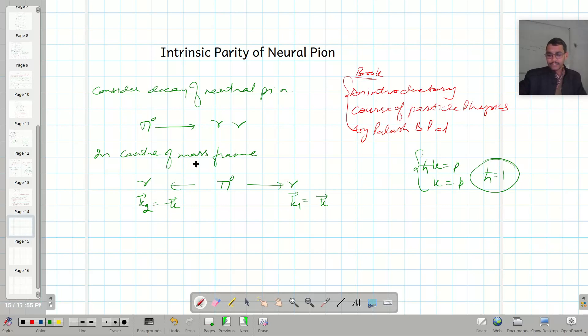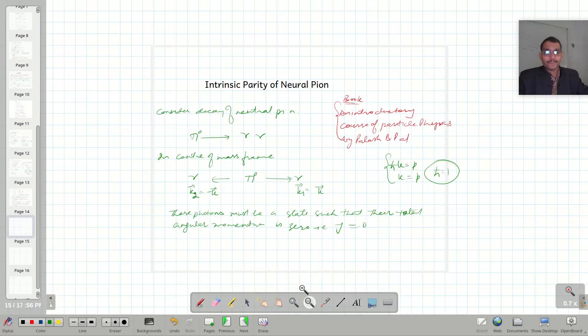So these two photons must be in the state, these photons must be in a state such that their total angular momentum is 0, that is J equals 0. So let us have a note here.